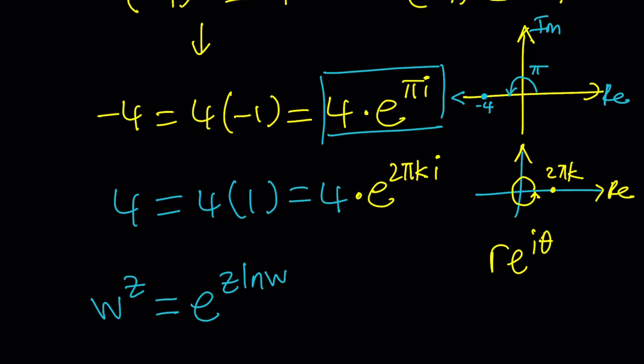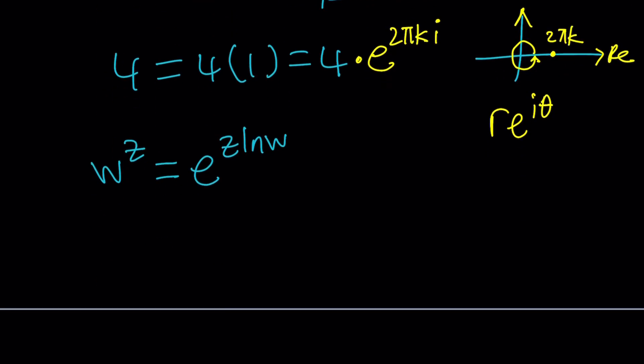That's how we can define it. And now, negative 4 to the power z, just replace w with negative 4. That's going to give you e to the power z times ln negative 4. Now, you may not know what ln negative 4 is at this point. Don't worry about it. We'll get to it. Okay?